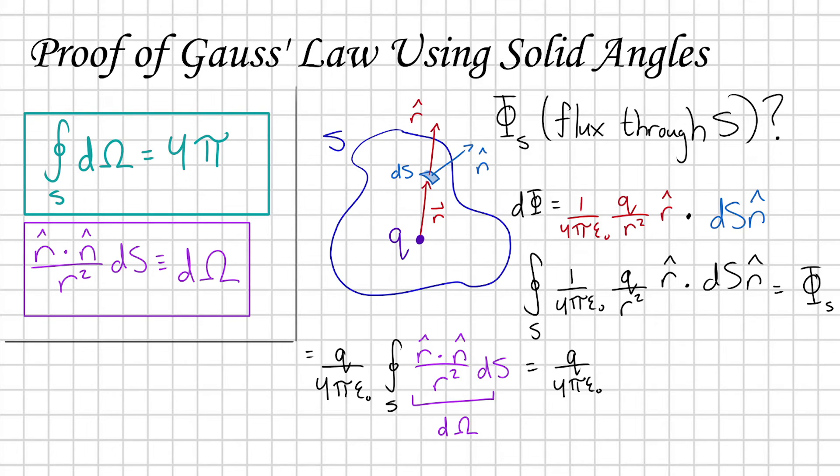And next, we're going to use our fact that we already showed before, which is that the solid angle subtended by any closed surface is always going to be equal to 4π. And just like that, we've shown that for any surface enclosing a charge,